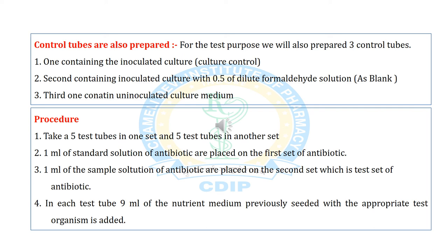Procedure for the tube assay method: Take 5 test tubes in one set and 5 test tubes in another set. 1 ml of standard solution of antibiotics is placed in the first set, and 1 ml of the sample solution of antibiotics is placed in the second set. In each test tube, 9 ml of the nutrient medium previously seeded with the appropriate test organism is added.